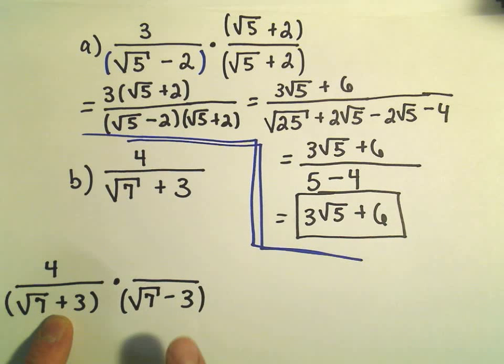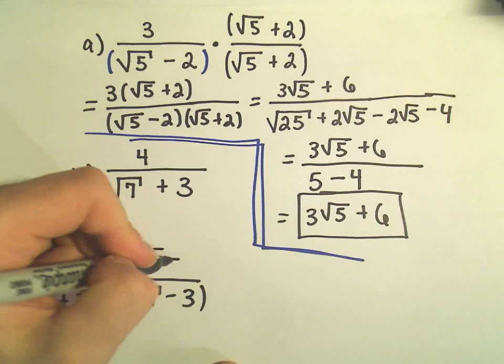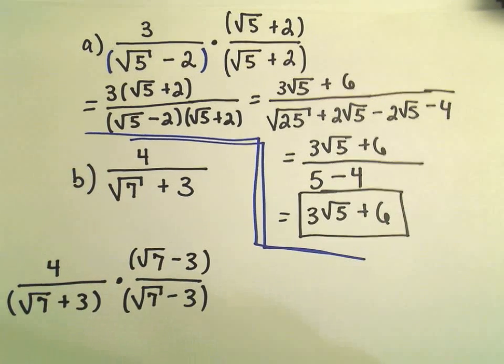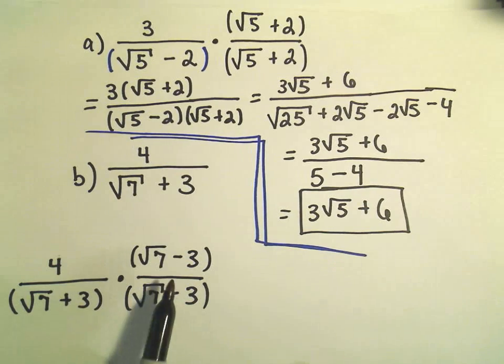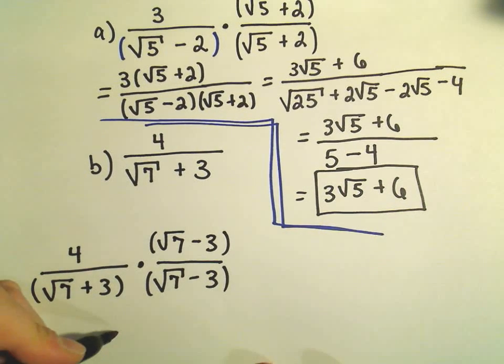Since I had a plus originally, I'm going to make it into a minus, and again, whatever I do to the bottom, I have to multiply to the top. Whatever I multiply the bottom by, I have to multiply the top by as well. And again, I'm just going to be careful with my algebra.